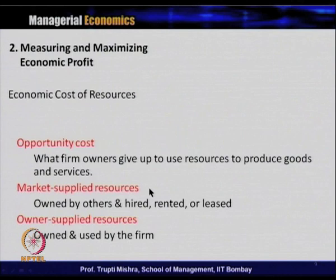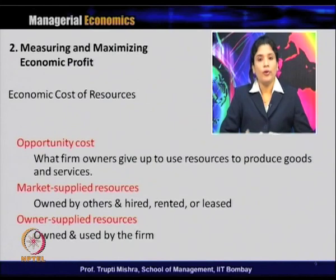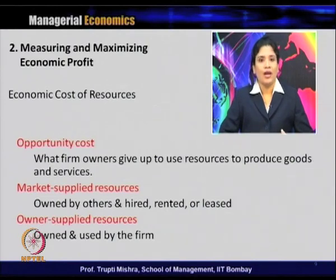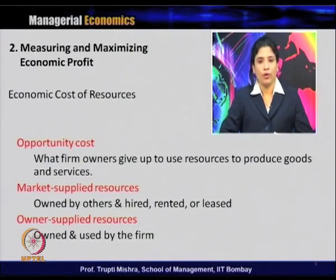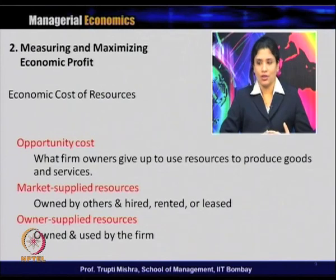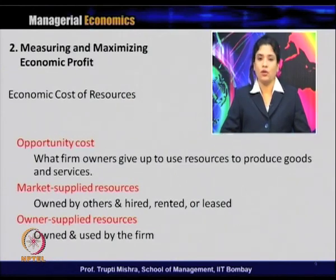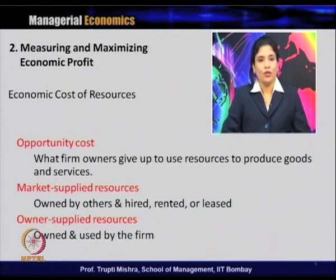Next, we discuss profit — the optimization problem or objective of the firm and the goal of a manager is to maximize profit from production. To reach profit, we first identify the cost associated with resources. There are three types of cost associated with resources: opportunity cost, which we just discussed; market-supplied resources; and owner-supplied resources.